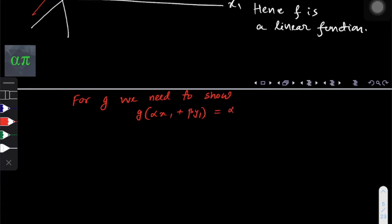is equals to alpha g of x₁ plus beta g of y₁. Now let's consider any two values of x₁ and y₁. Let's say we pick x₁ and y₁ equals to 0, and let's consider any value of alpha, beta such that in this case we consider alpha, beta equals to 1.